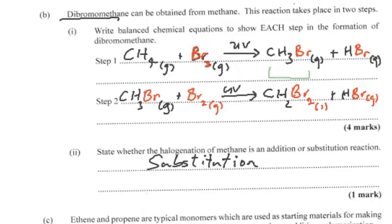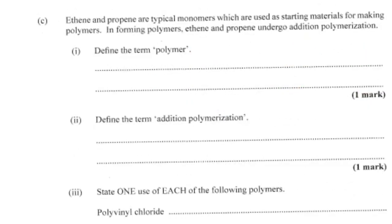Now for the next part: ethene and propene are typical monomers which are used as starting materials for making polymers. It's almost like this is a follow-up to what was in part three, where they spoke about cracking. These are some of the smaller, more useful compounds that we get when we crack a long-chain hydrocarbon, and they're used as precursors or starting materials for making polymers. In forming polymers, ethene and propene undergo addition polymerization.